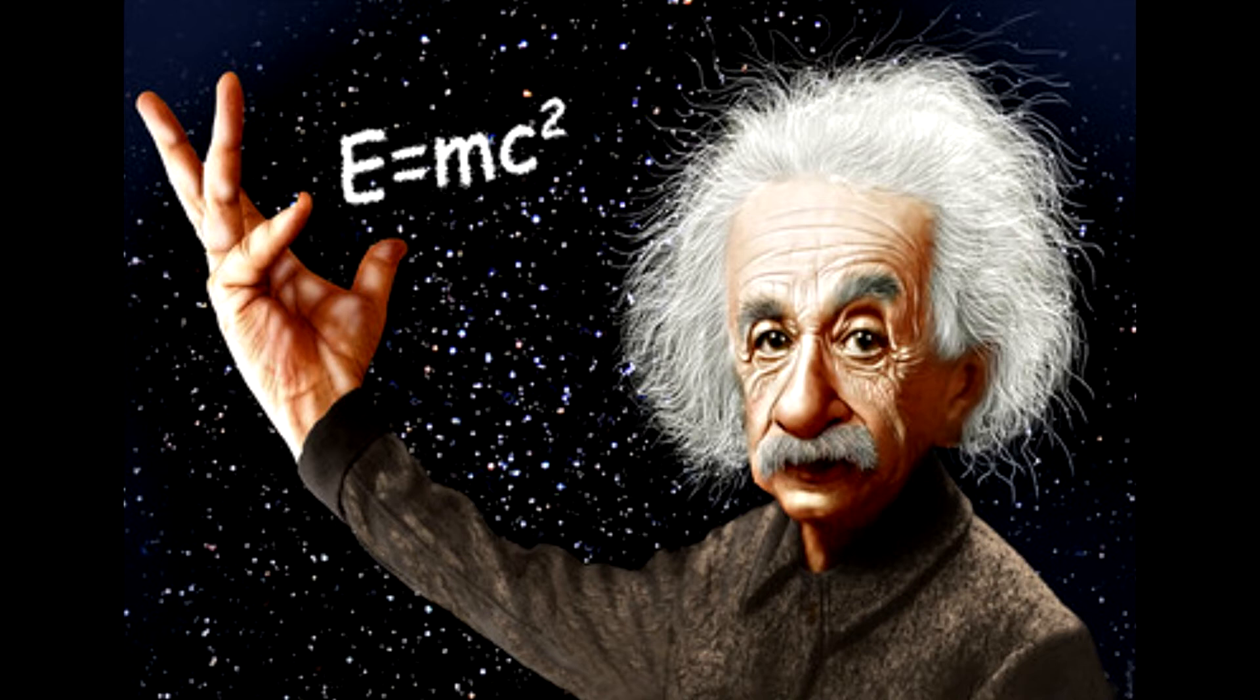Einstein was born of Jewish parents in Ulm, Germany. He spent many years in Switzerland, becoming a Swiss citizen in 1901, and gaining his Doctor of Philosophy degree in 1905 from Zurich University.